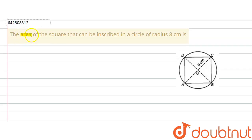The given question says that the area of the square that can be inscribed in a circle of radius 8 cm is. So there is a circle of radius 8 cm and a square is inscribed in the circle. The circle is surrounding this square.